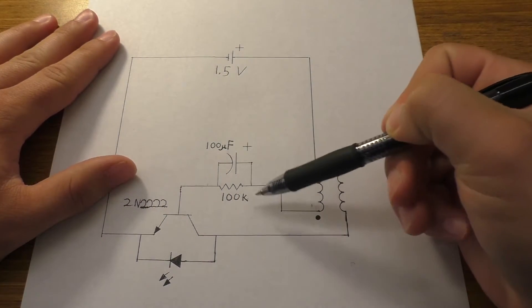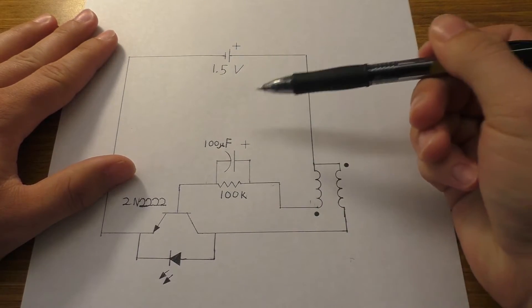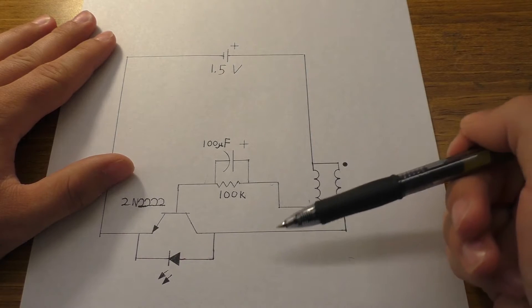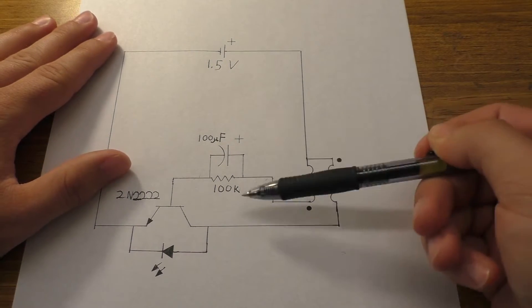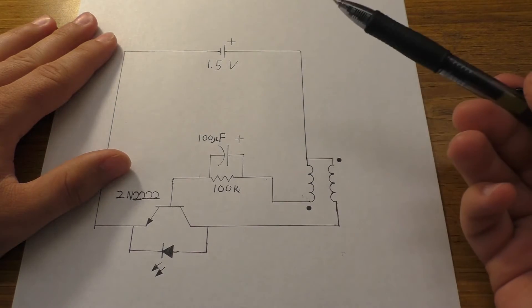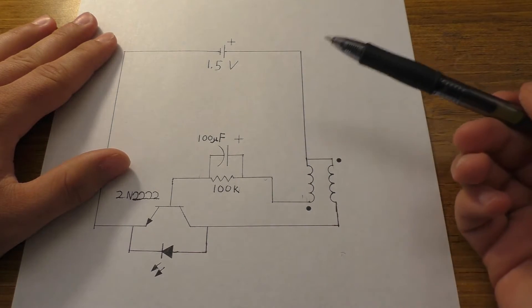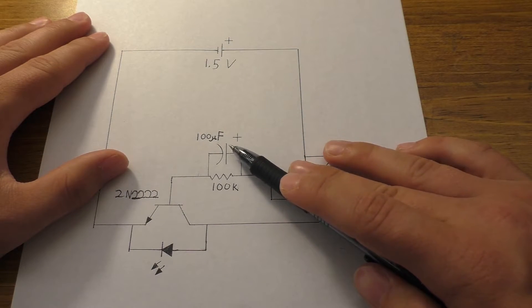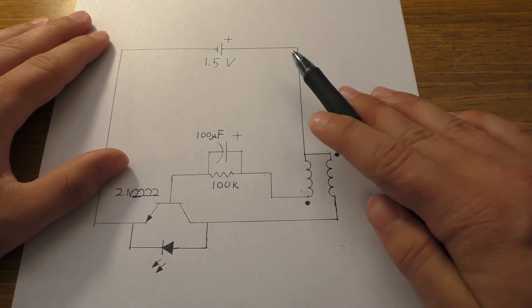So it's these two components that are setting up the blink rate. If you want it to blink slower, you can use a larger value capacitor or resistor. Or if you want it to blink faster, you could use a smaller capacitor or a lower value resistor. Though usually when I change the blink rates of these things, I try to change the capacitor instead of the resistor.